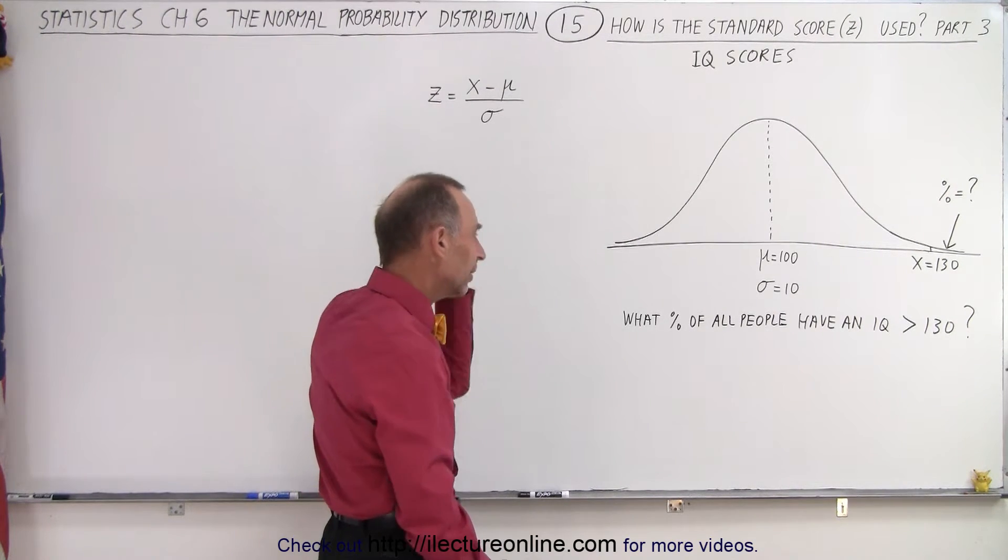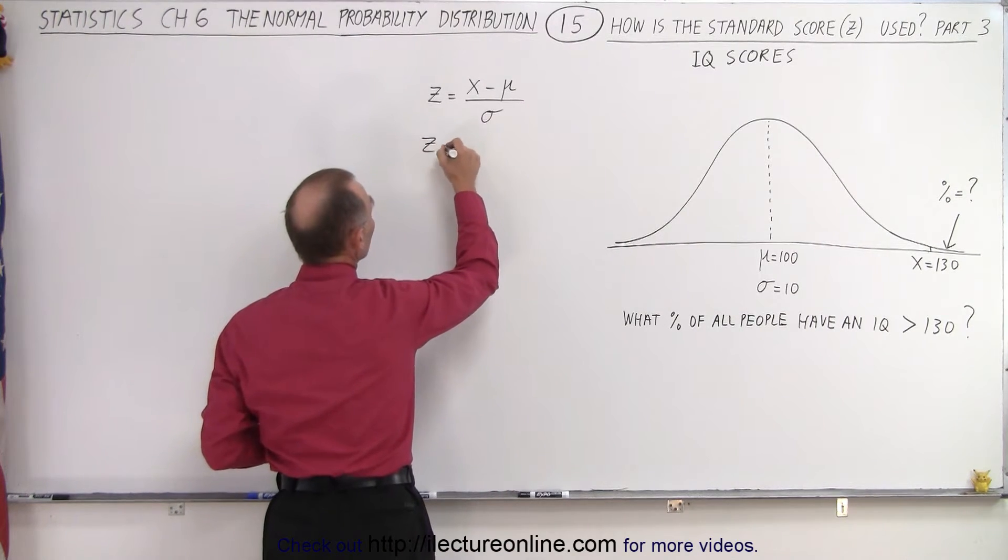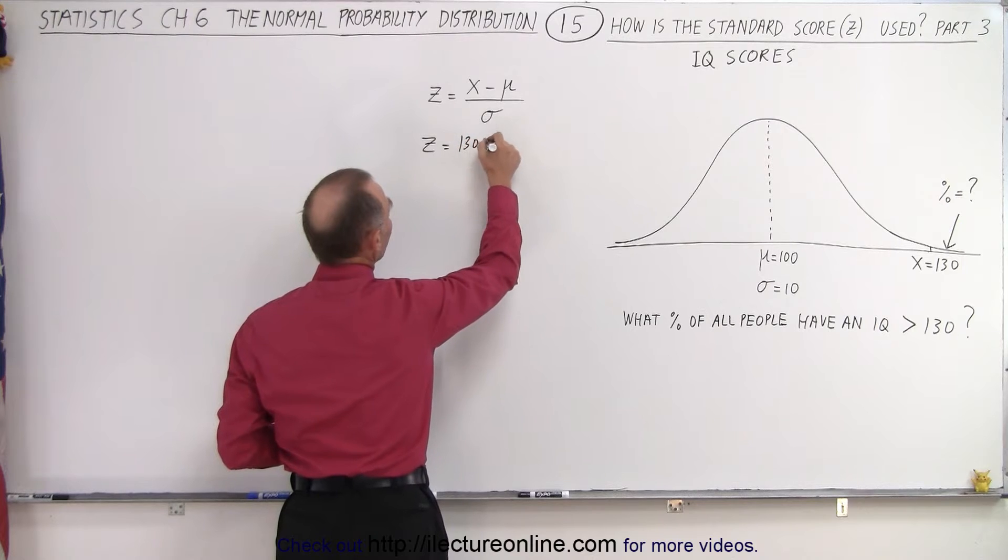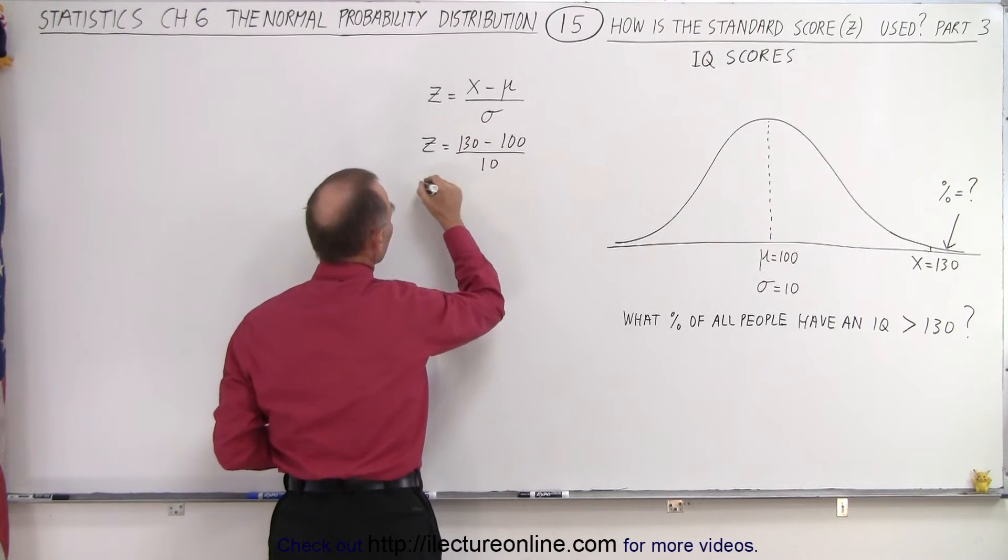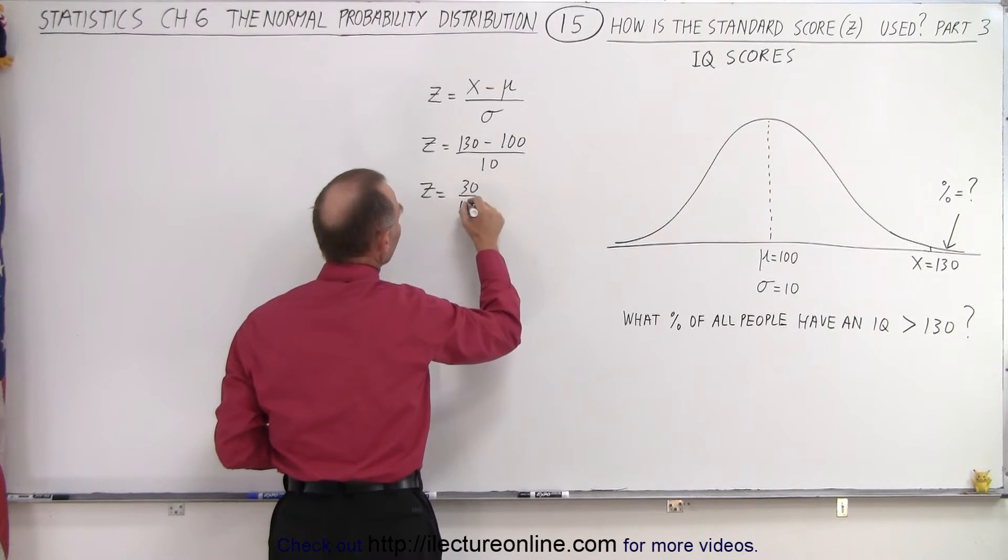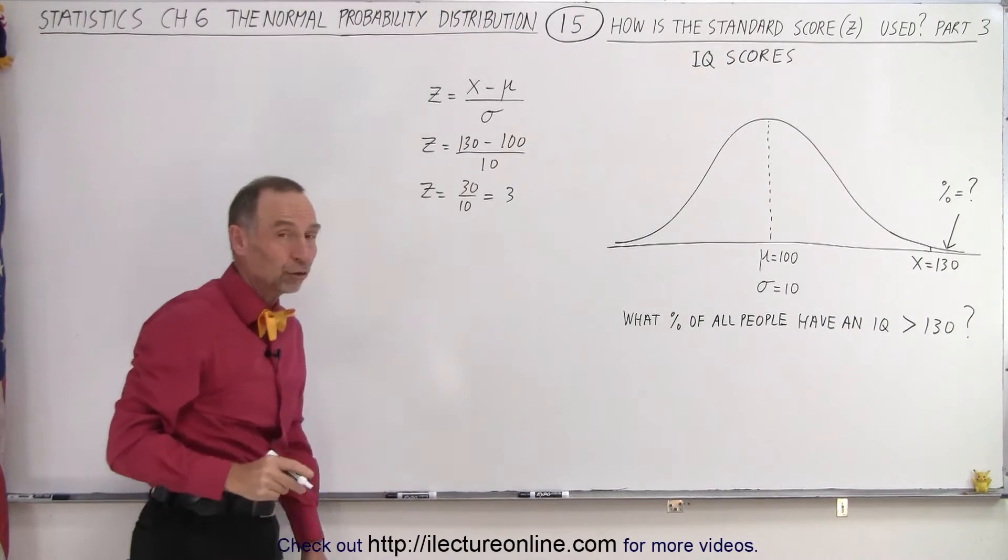Let's see here. We use this equation to find z. z equals 130 minus the mean of 100 divided by 10. That means z equals 30 divided by 10, which equals 3. So once we know the standard score,